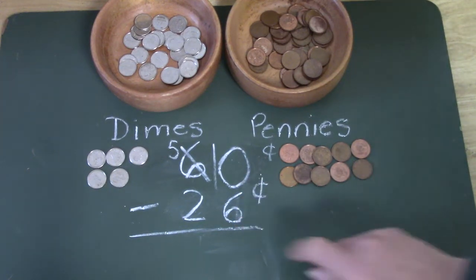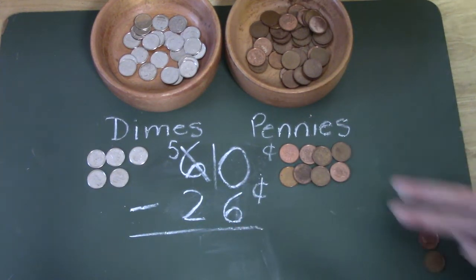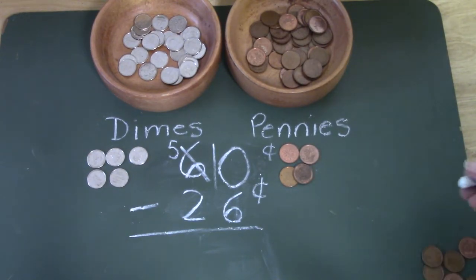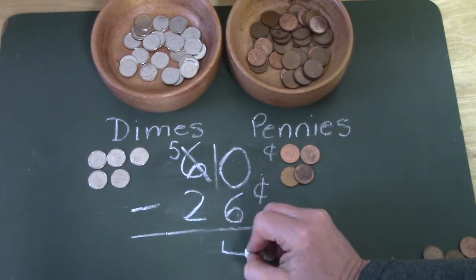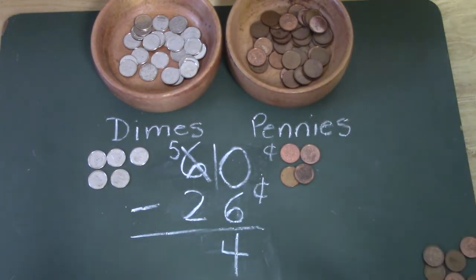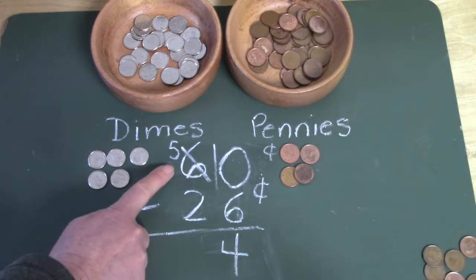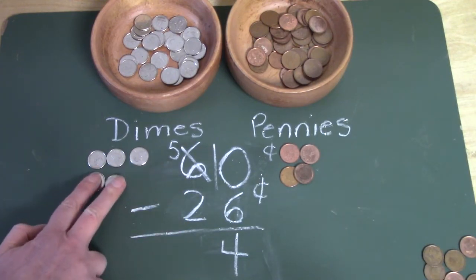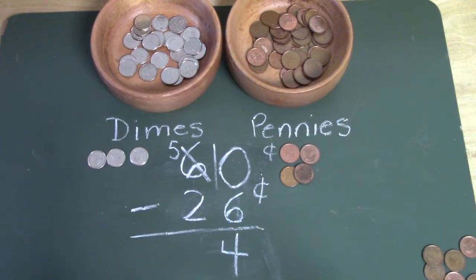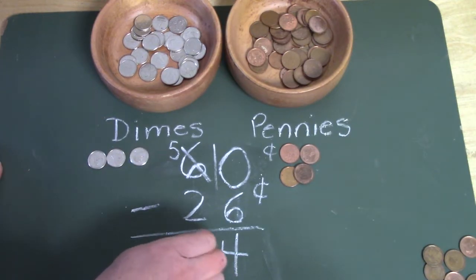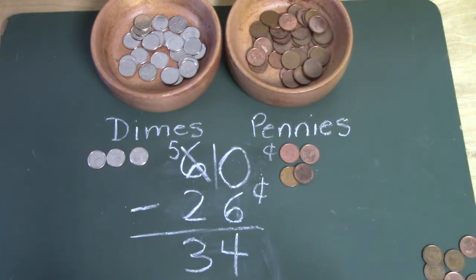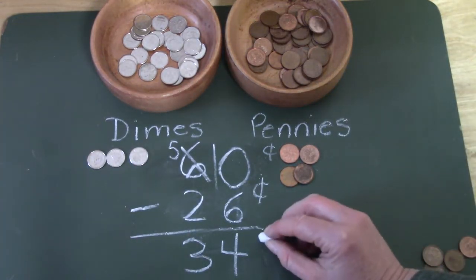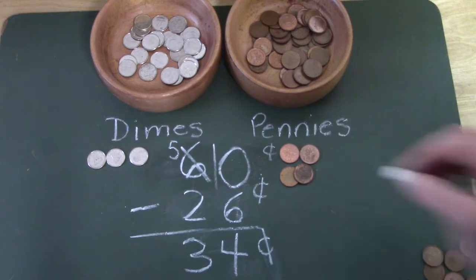Now I have ten pennies and I'm going to take six of them away: two, four, six. How many pennies do I have left? That's right, I have four pennies. I have five dimes and I'm going to take away two of them. How many dimes do I have left? Three. Sixty cents take away 26 cents is 34 cents.